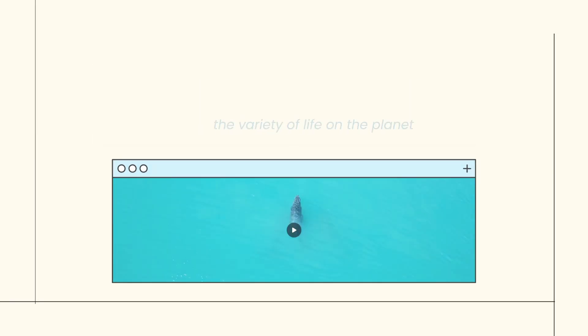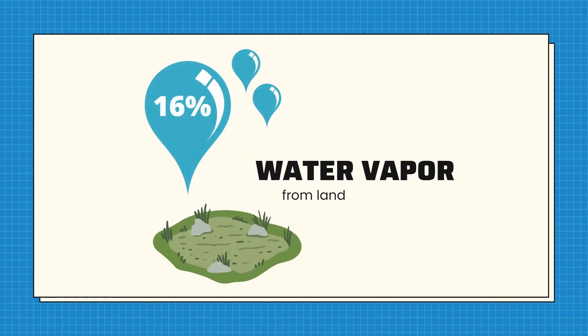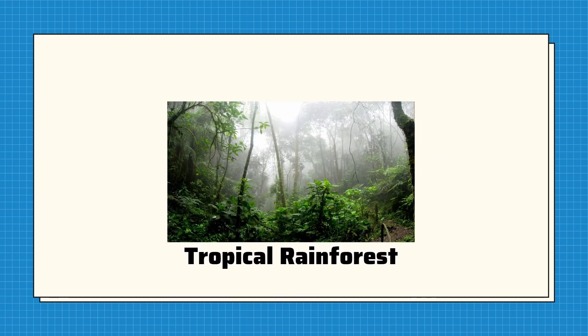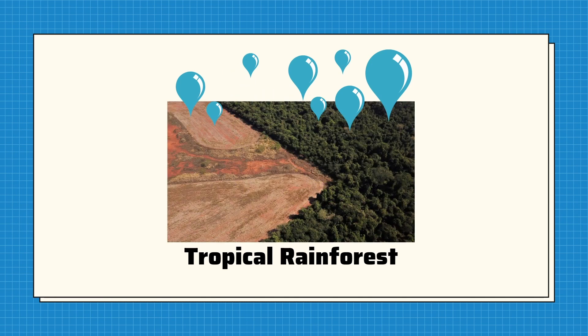Only about 16% of water vapor comes from land. Small as it seems, this water vapor plays a crucial role in biomes such as the tropical rainforest. Dense tropical rainforests have such numerous plants that most of the local rainfall comes from the water vapor transpired by plants. Due to deforestation, transpiration rates will significantly decrease, resulting in reduced precipitation.